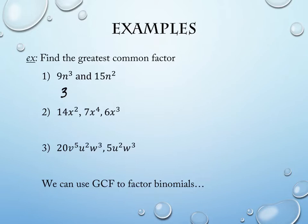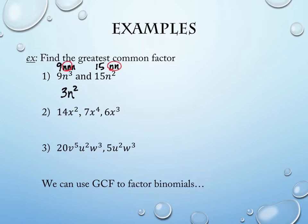The first term has n³ and the second has n². That means three n's in the first one and two n's in the second. How many n's do they have in common? Two — they share two n's. So the greatest common factor for the variable component is n². The GCF of 9n³ and 15n² is 3n².